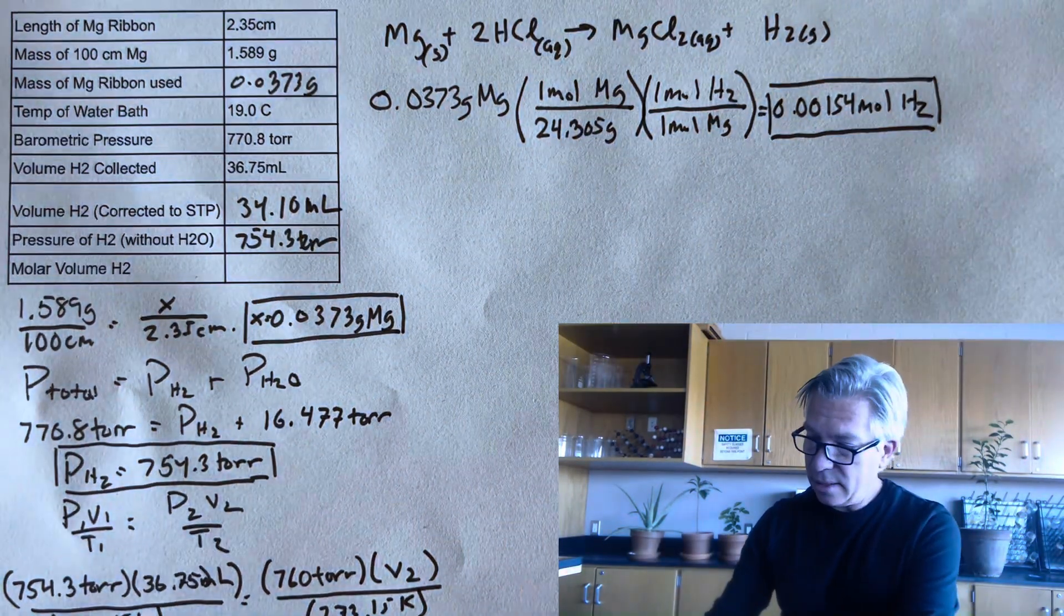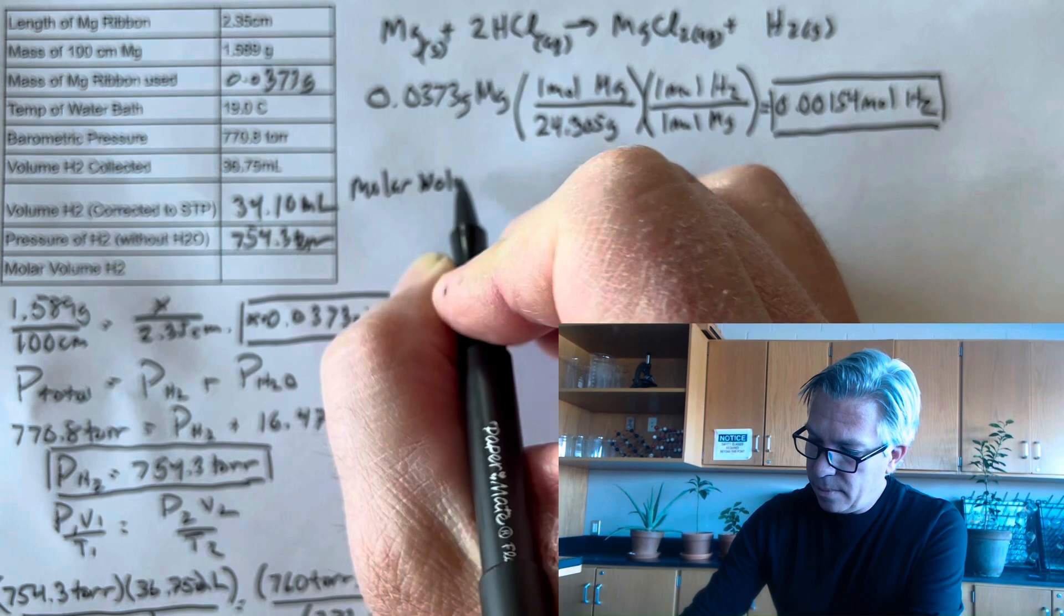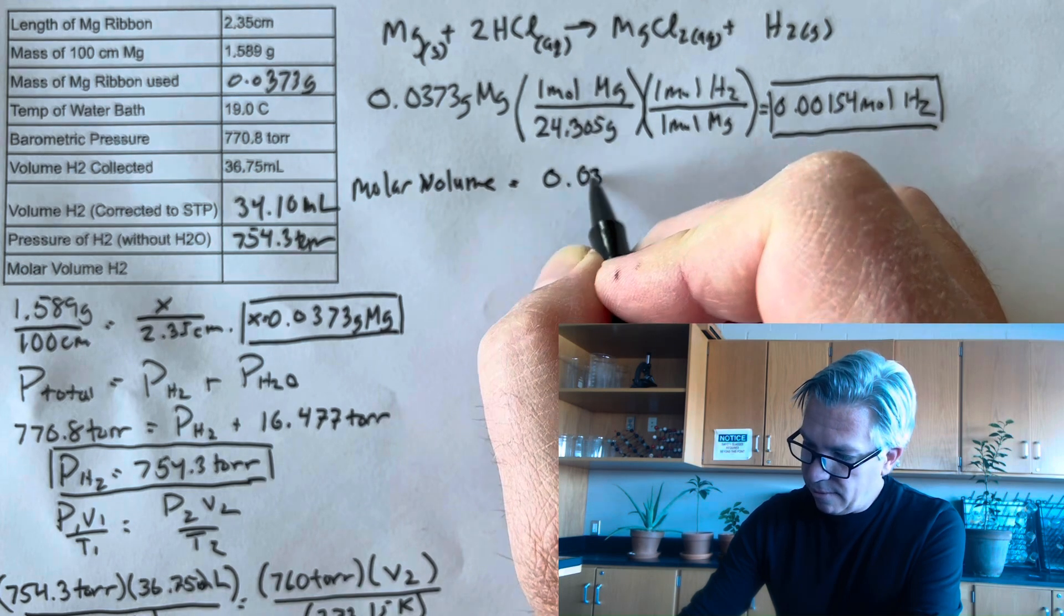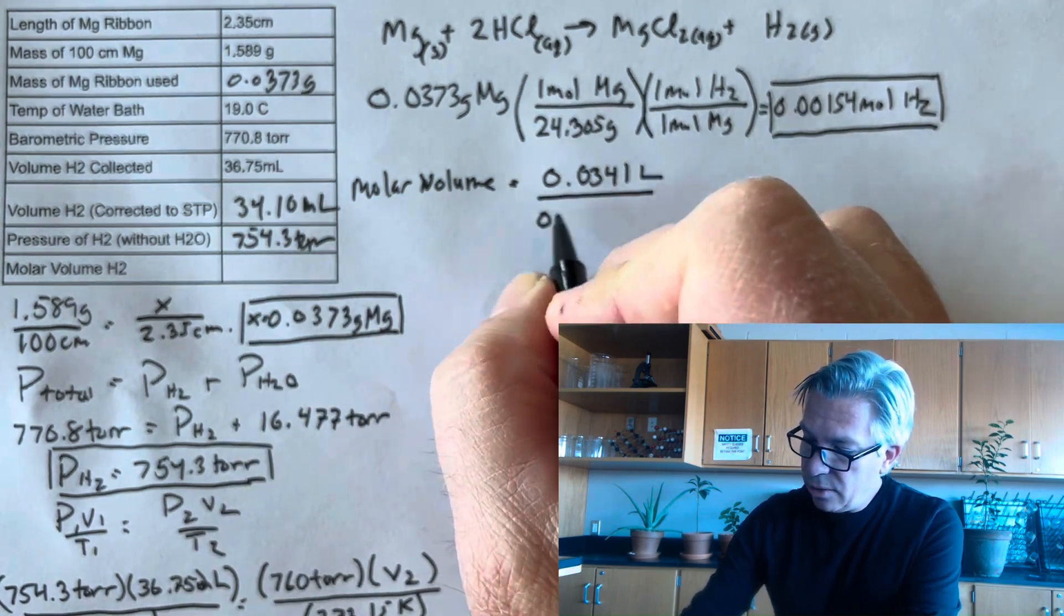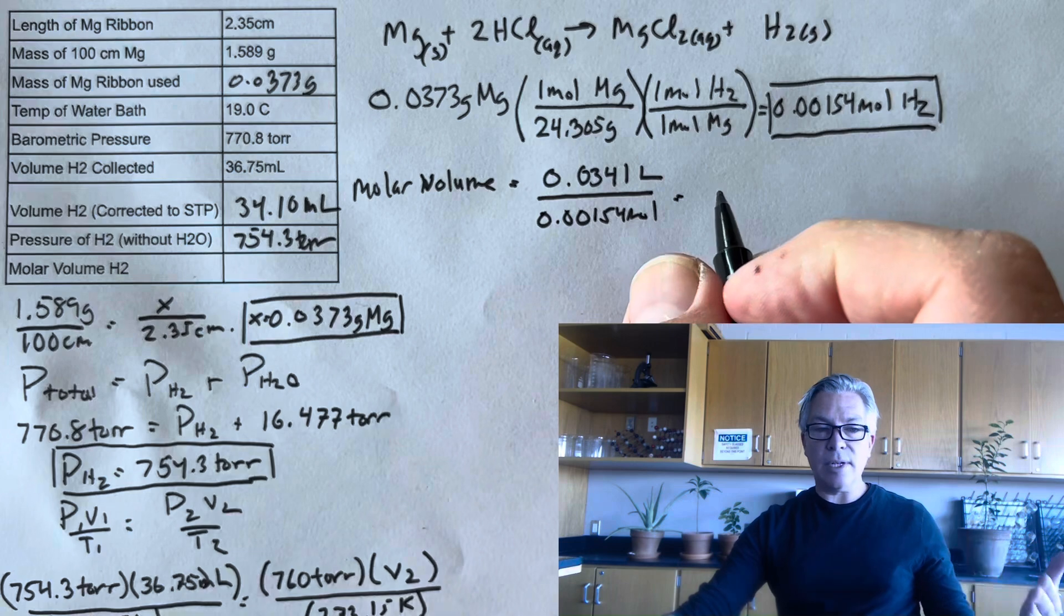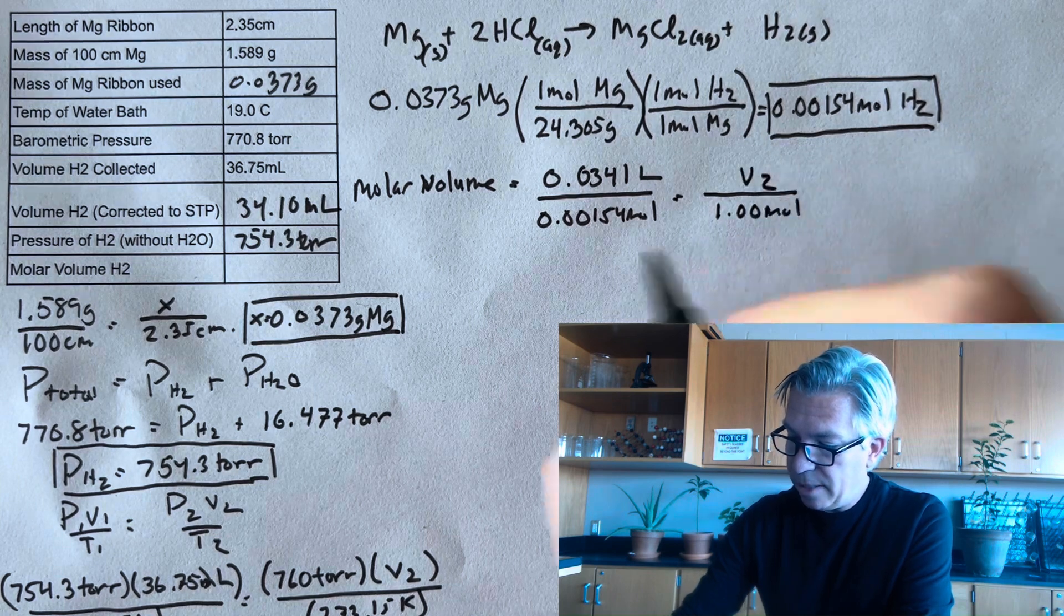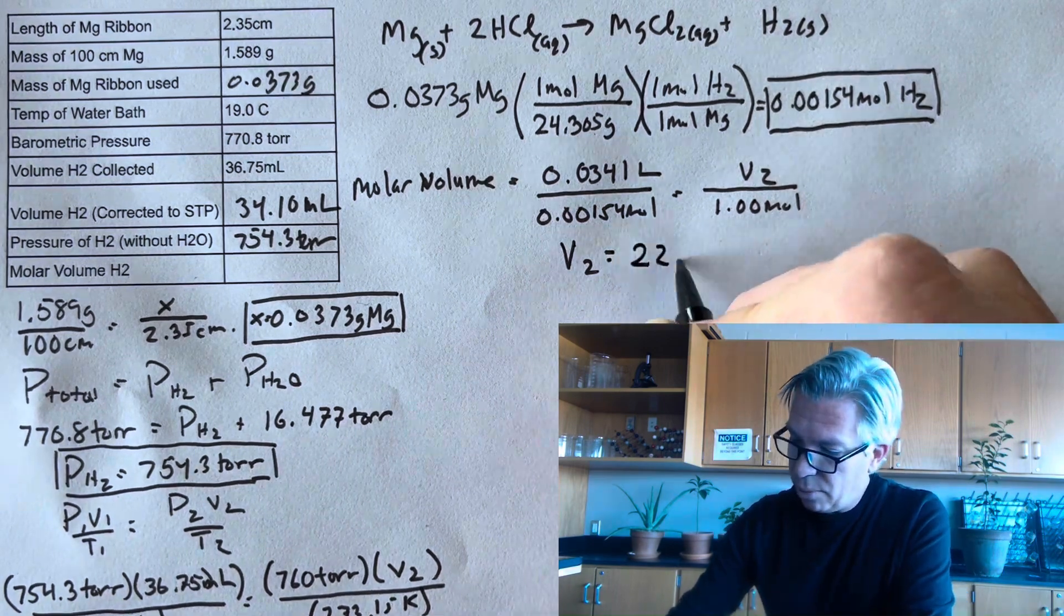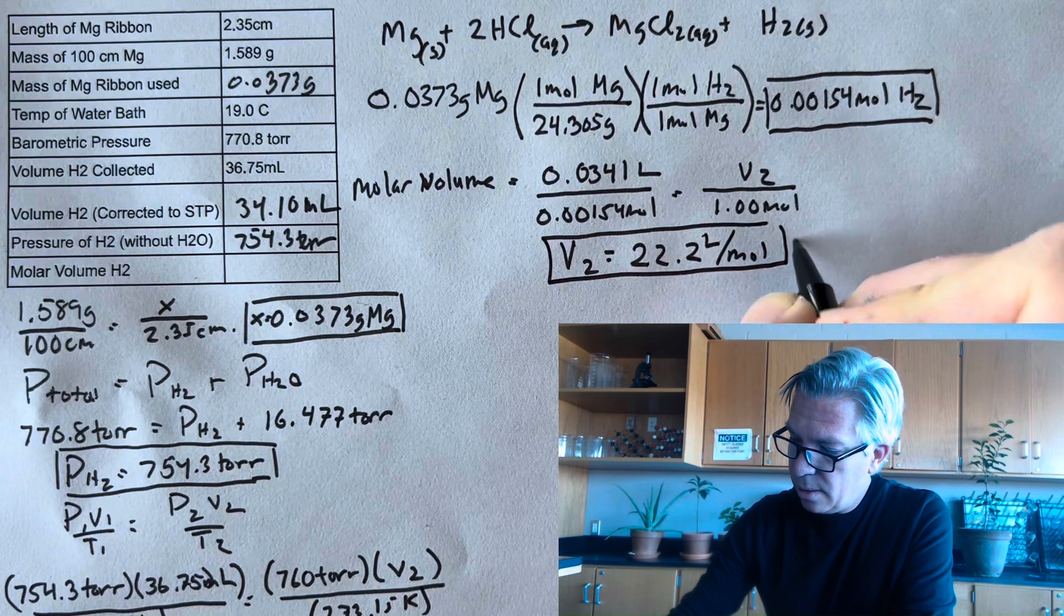So we're almost there. We got one more step to go. And that step is to simply take the volume, let's say molar volume, equals the volume of the gas that I collected, 0.0341 liters. I changed that to liters right there. And that contained 0.00154 moles. So proportionally, if I were to create an entire mole of hydrogen under these conditions, what would its volume be? All right. And a quick tap...